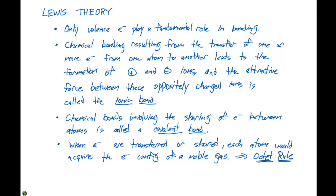Lewis came up with a notation for the main group elements displaying their valence electrons, and we refer to these as Lewis symbols. For example, cesium has one valence electron, which is the 6s1. Lewis indicated how many valence electrons each atom has by putting a little dot next to them. For aluminum, we need to show that it has a 3s2 3p1 valence electron configuration, so we put three electrons around that central atom.